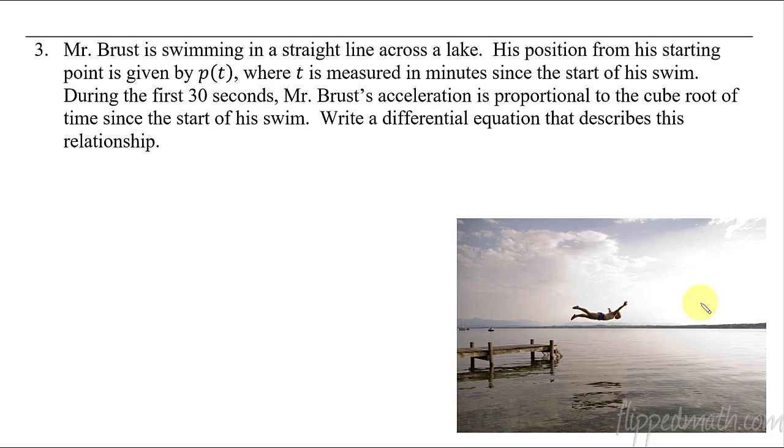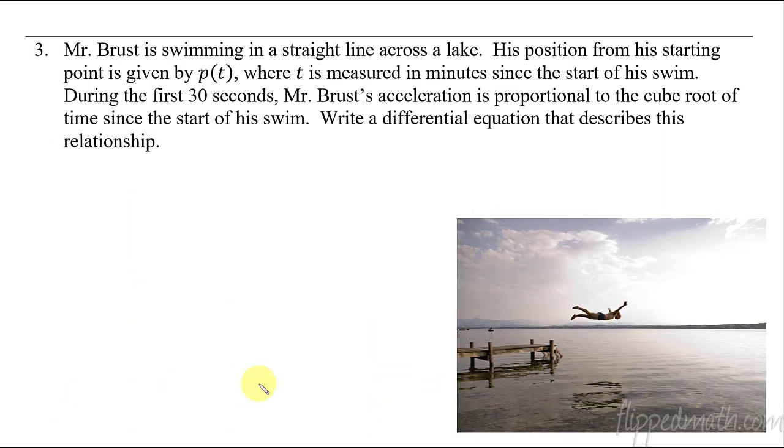All right, last problem. We have Mr. Bruss swimming in a straight line across the lake. Let's see, is this Mr. Bruss? He's jumping in the pool and he's swimming. That is Mr. Bruss. Okay, cool. So his position from his starting point is given by P of T. P is his position. You got to do that over and over again so kids don't get messed up with position, velocity, acceleration. So where T is measured in minutes since the start of his swim. Okay, so during the first 30 seconds, Mr. Bruss' acceleration is proportional to the cube root of time since the start of his swim. Holy cow, what is going on?